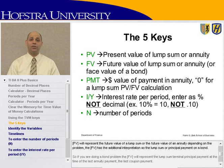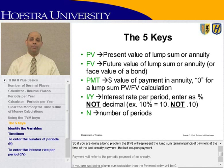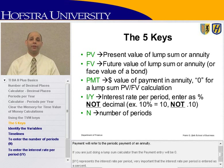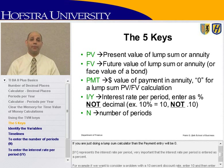FV has the additional interpretation as the lump sum or principal payment on a bond. If you are doing a bond problem, the FV will represent the lump sum terminal principal payment at the time of the last annuity payment — the last coupon payment. Payment will refer to the periodic payment of an annuity. If you are just doing a lump sum calculation, then the payment entry will be zero.